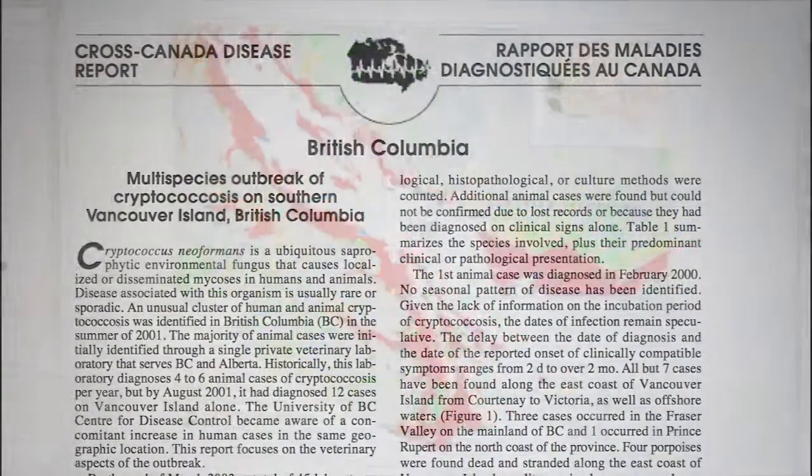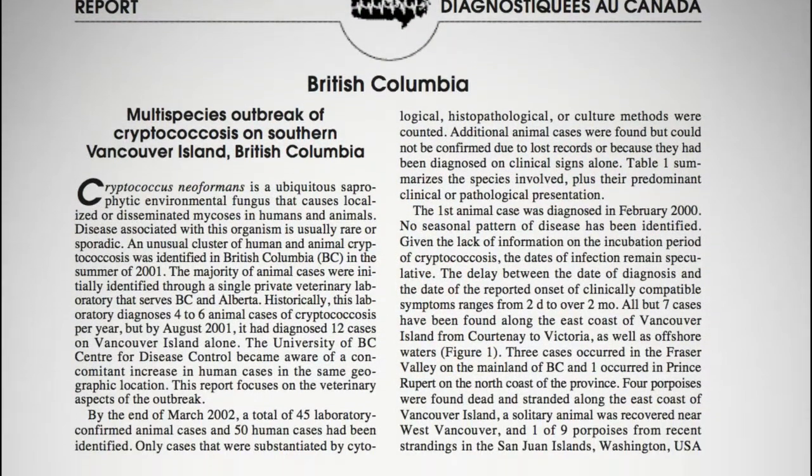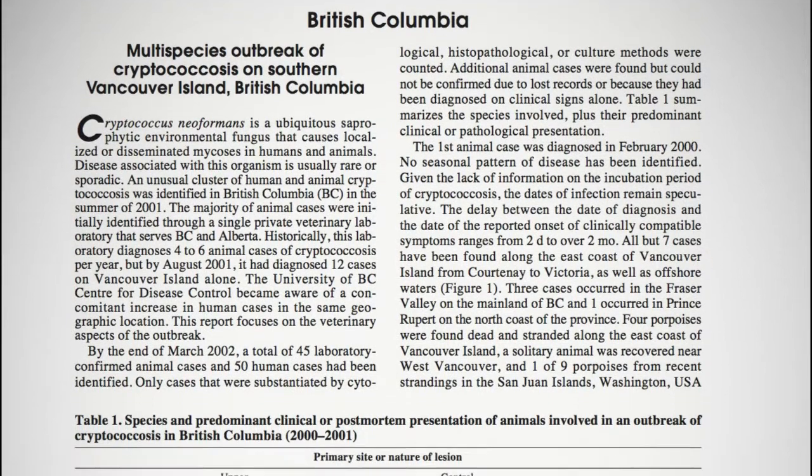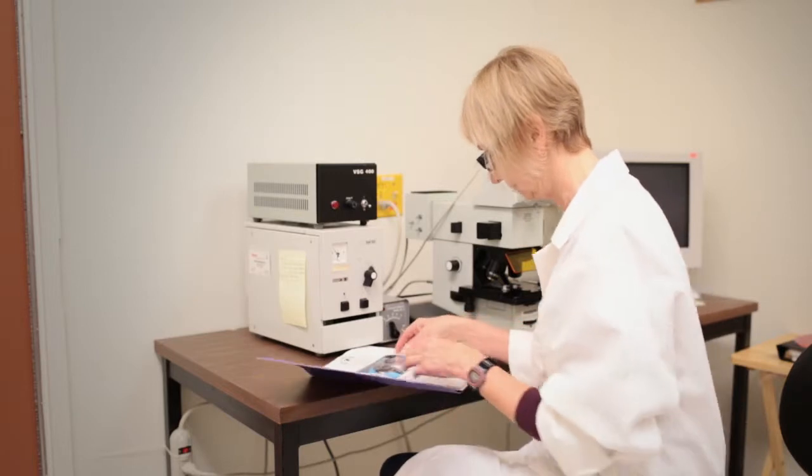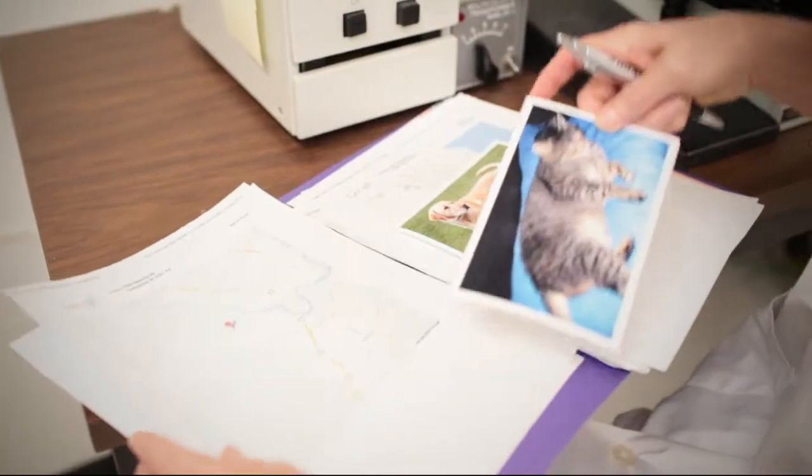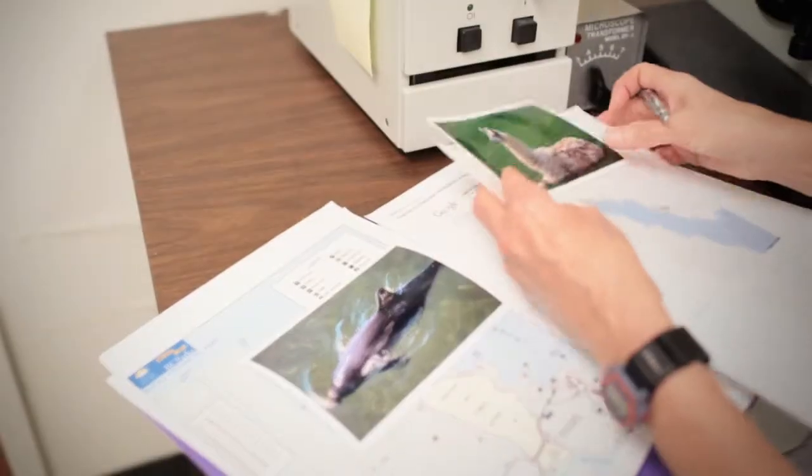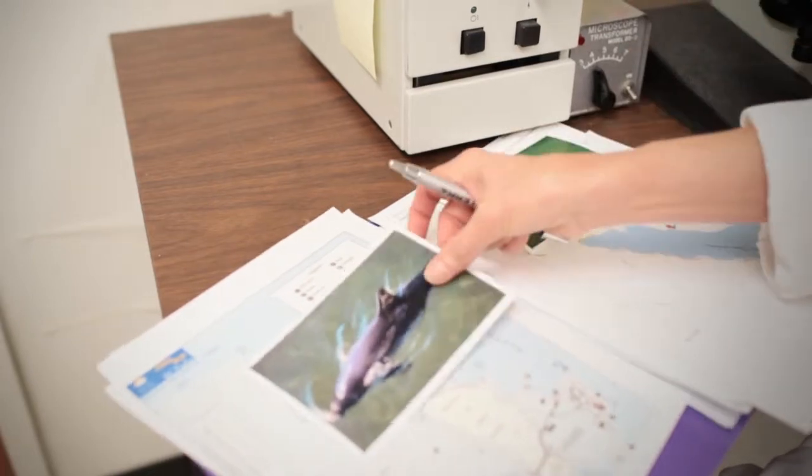One of the first clues was a report by Dr. Craig Stevens, a veterinary epidemiologist at the Center for Coastal Health, who had noticed an unusual cluster of human and animal cases on Vancouver Island. People, dogs, cats, porpoises, even llamas were being diagnosed with Cryptococcus.